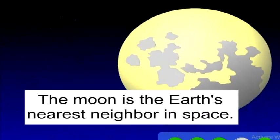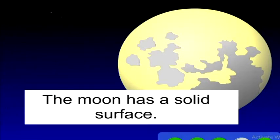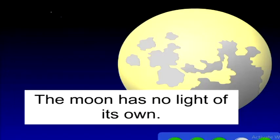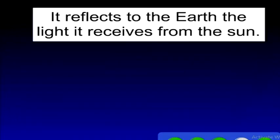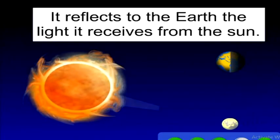The moon is the Earth's nearest neighbor in space. The moon has a solid surface. The moon has no light of its own. It reflects to the Earth the light it receives from the sun.